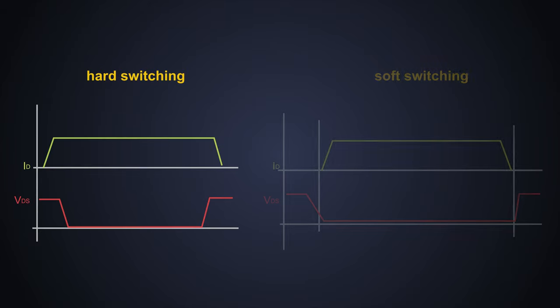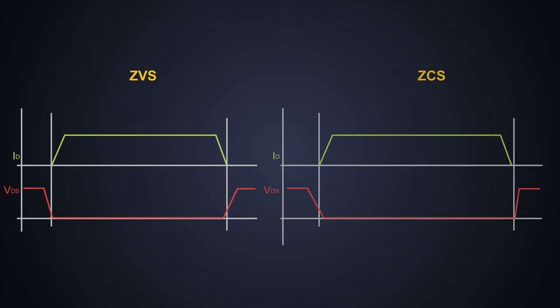I hope you have understood about the difference between hard switching and soft switching and the advantages of the soft switching. We will see about the zero voltage switching and zero current switching in the resonant converter in coming videos. Till then stay tuned.